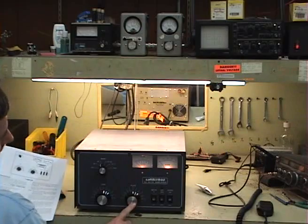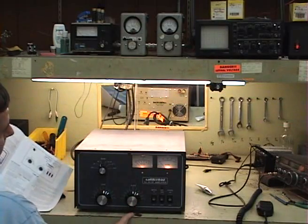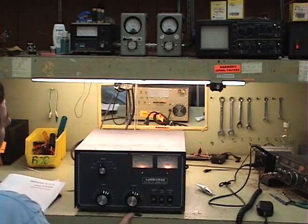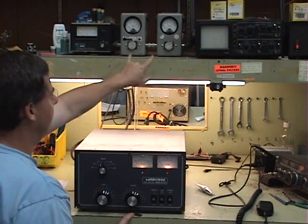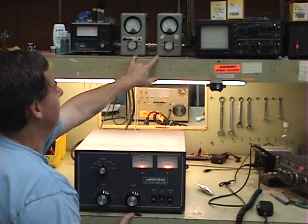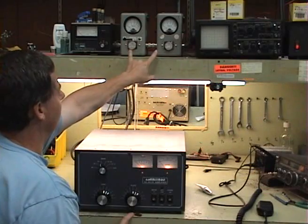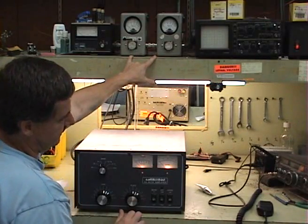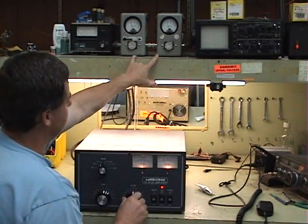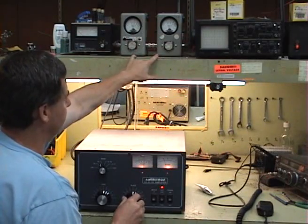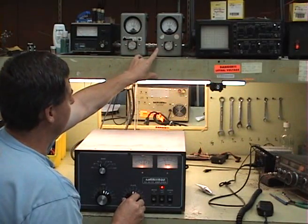Okay, now we're going to take and tune the plate tuning control by watching our forward power meter. Up here is our forward power meters. We're going to watch these, and while we transmit at the same time, we'll adjust the plate until I can get my power meter to peak, wherever it peaks.